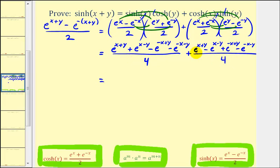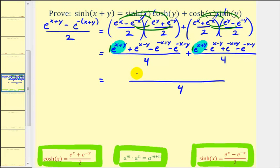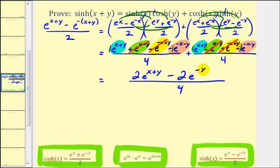We have a common denominator of four, so we add the two fractions and combine like terms. The two e to the x plus y terms sum to two times e to the x plus y. The e to the x minus y terms are opposites and sum to zero. The e to the negative x plus y terms are also opposites and sum to zero. Finally, the two negative e to the negative x minus y terms both have a coefficient of negative one, giving minus two e to the negative x minus y.